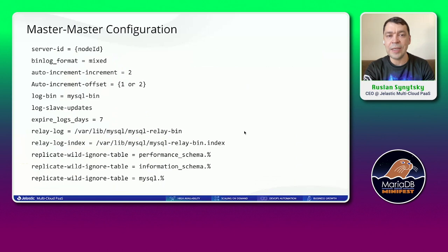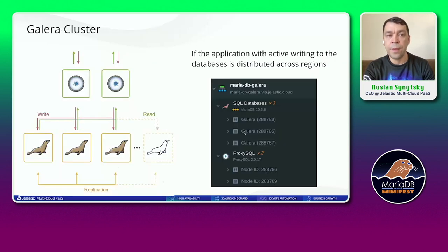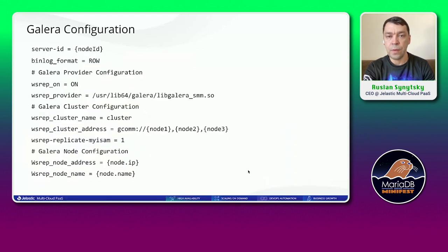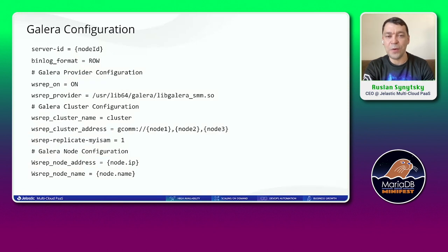You can see the list of configs we configure by default for MasterMaster. With Galera cluster we create three nodes by default and two ProxySQL instances, and there is a list of configurations we provide by default.